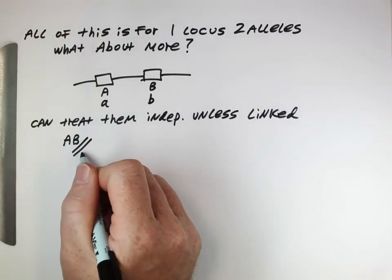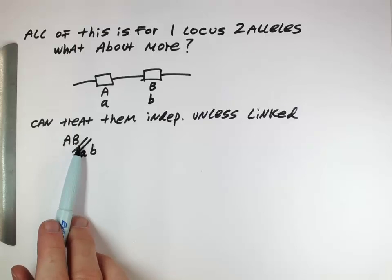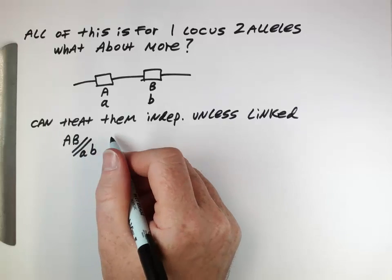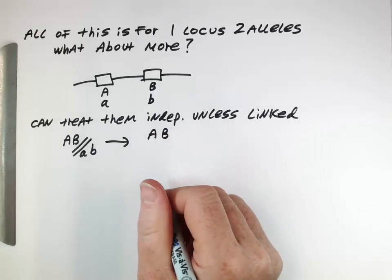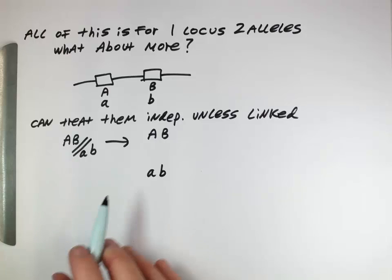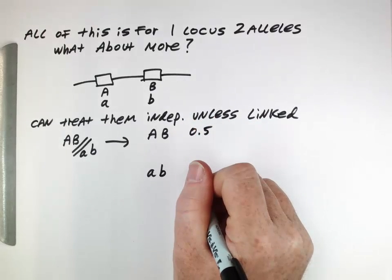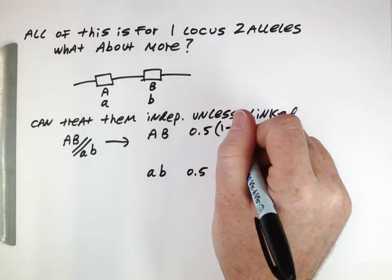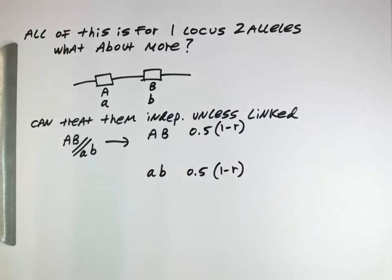Let's think about an individual. This individual on one chromosome has a capital A allele and the capital B allele, and on the other chromosome, lowercase a and lowercase b. When they produce their gametes through meiosis, if there's no recombination, they'll produce these gametes — this chromosome will go into the sperm or egg, that chromosome into the sperm or egg — and you would get those haplotypes at 50% each. But that's only if there's no recombination.